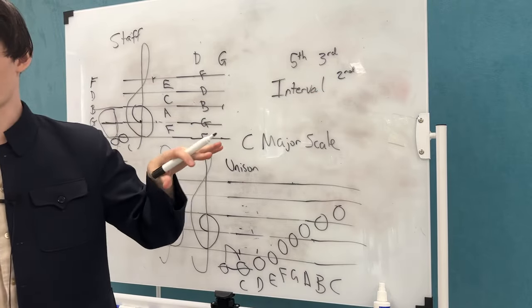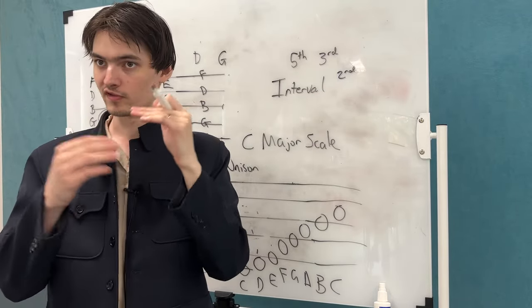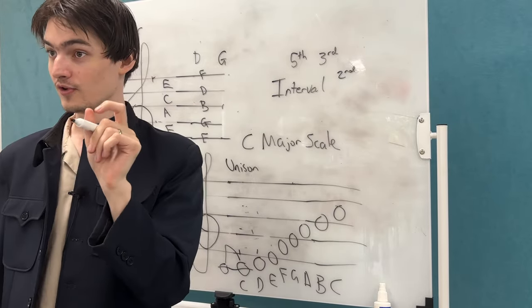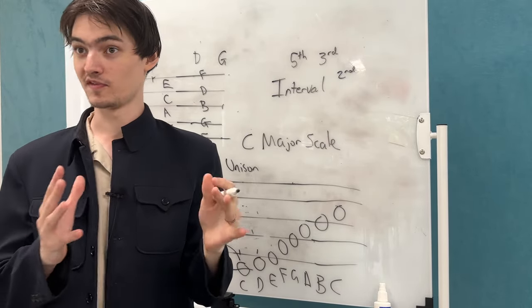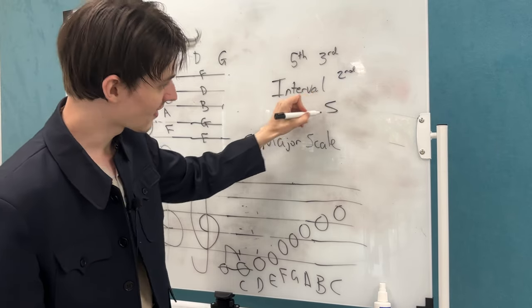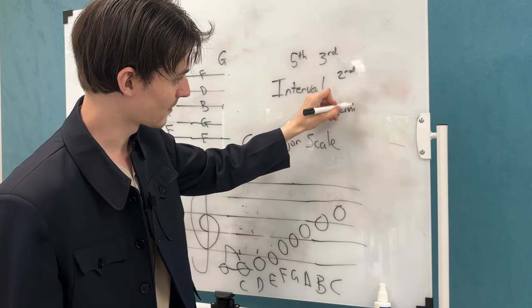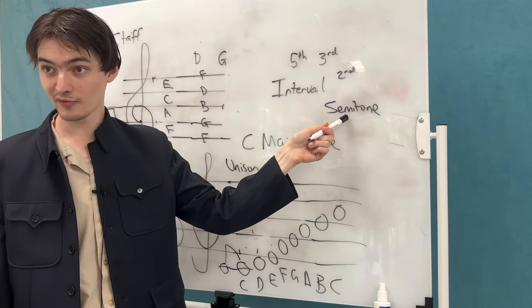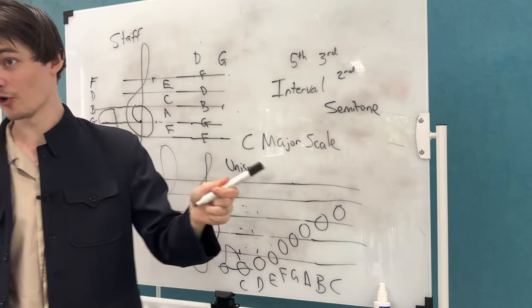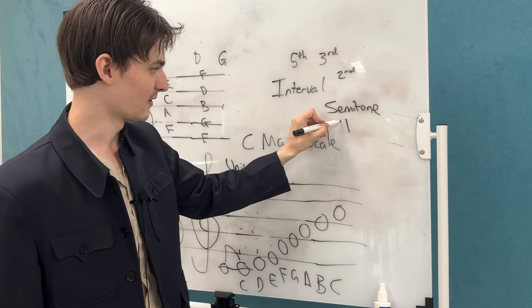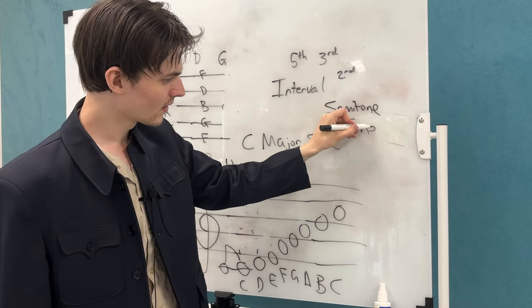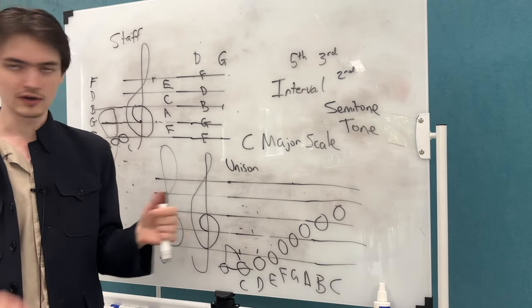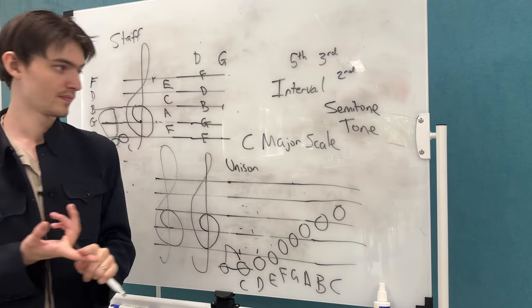And we're going to describe them in the simplest way possible, by the smallest value of the distance. The smallest possible value you can get in music, if you're in the Western music tradition, is called a semitone. Where semi meaning half implies that there must be something called a tone as well. And there is. A scale comprises here of only semitones and tones. That's all you're going to get.